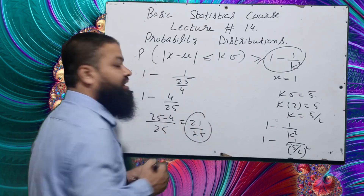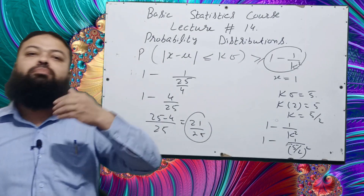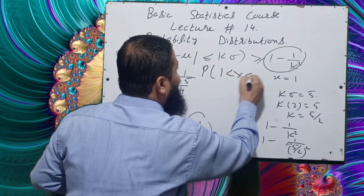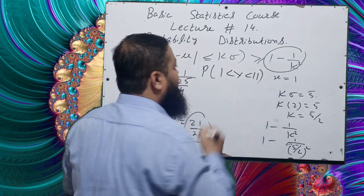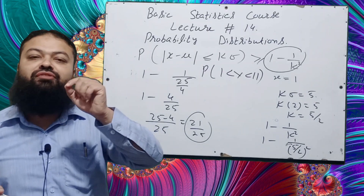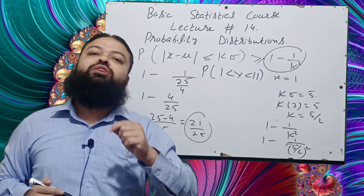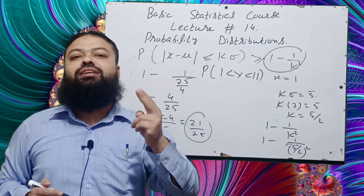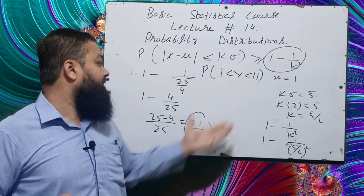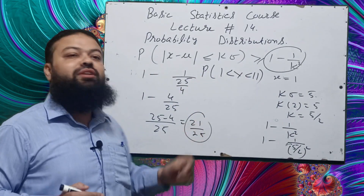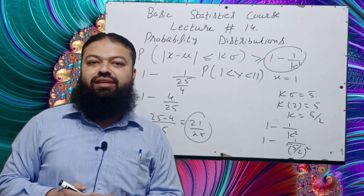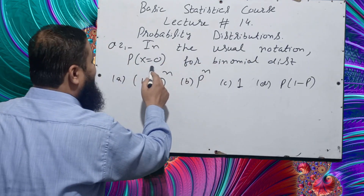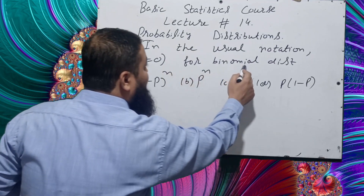So the correct option in the exam when finding P(1 < X < 11) using Chebyshev's lower bound is 21/25. First calculate the mean and sigma of the binomial distribution, then substitute to find the probability.